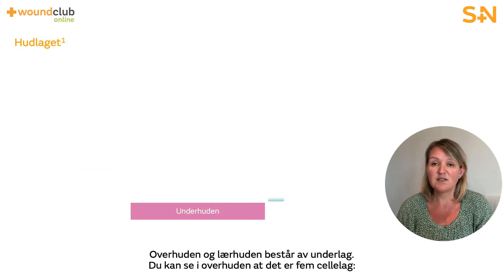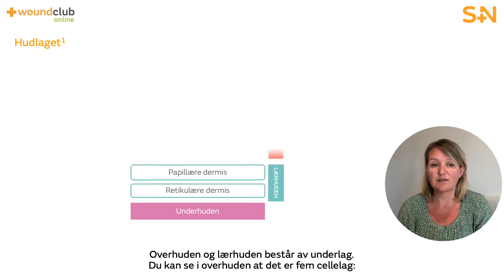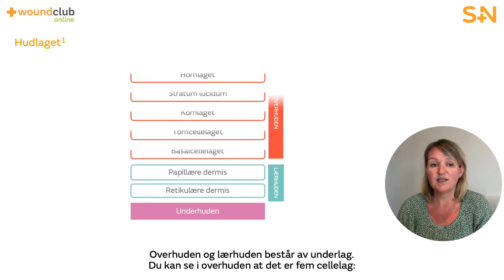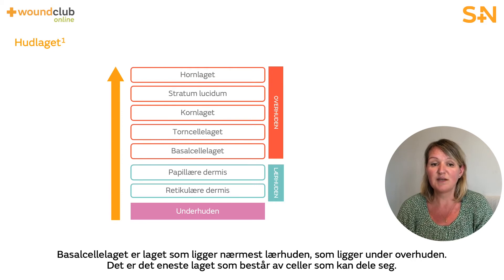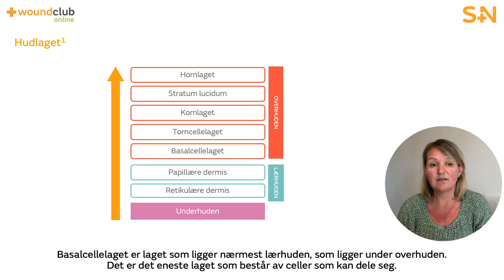The epidermis and dermis are made up of sub-layers. In the epidermis there are five cell layers. The stratum basale is the nearest layer to the dermis, located under the epidermis, and it's the only layer that consists of cells capable of division.